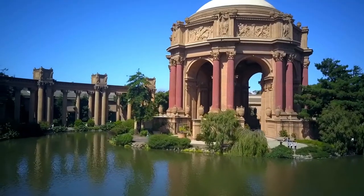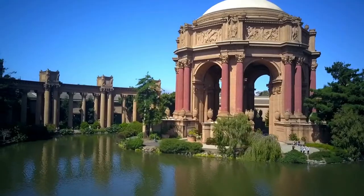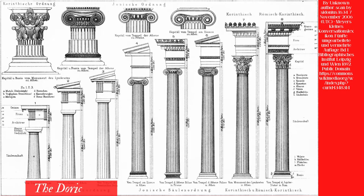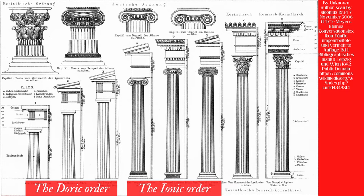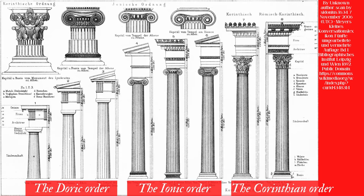Those orders continue to be widely used in architecture today. The Doric order is the simplest and shortest, with no decorative foot, vertical fluting, and a flared capital. Ionic columns are taller and thinner, with a decorative foot and scroll-shaped volutes on the capital. Corinthian is the most complex order, which is tall and thin and features a decorative foot, volutes and acanthus leaves on the capital.